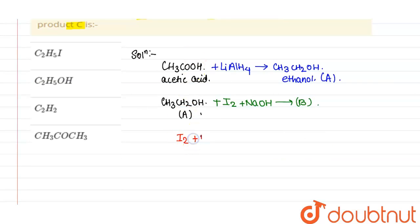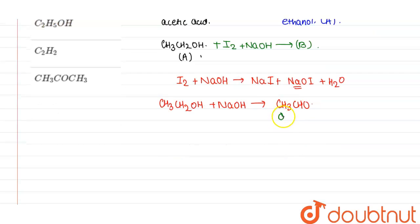Now what happens here, at first step this iodine and NaOH will react with each other and it will be giving us NaI, NaOI along with H2O. Now this NaOI is a good oxidizing agent and it will oxidize this CH3CH2OH to CH3CHO, that is aldehyde group. Now this molecule is acetaldehyde.